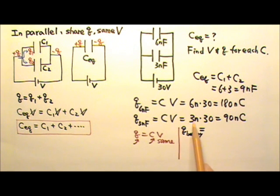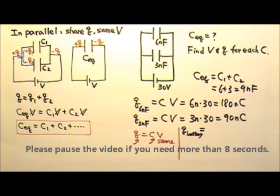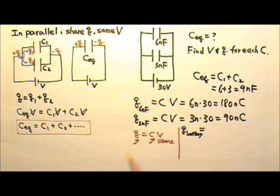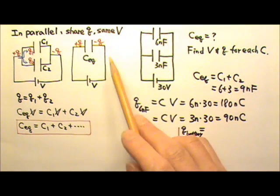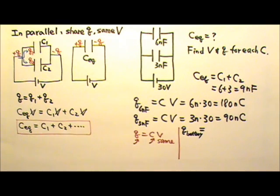What if I ask you to find the charge pumped by the battery? Because the two capacitors in parallel share the total charge from the battery. So it is the sum of these two, 180 plus 90 nC. So it's 270 nC.